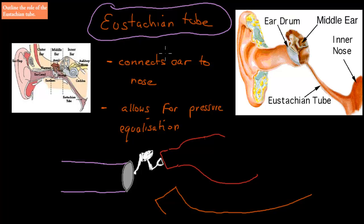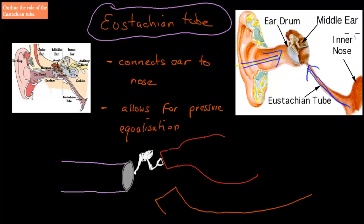The Eustachian tube is the tube which connects the middle ear to the actual nose. So we've got the eardrum here, which is where air passes in — past the pinna onto the eardrum. And then we've got air also coming in the other way, into the middle ear from the other side. It pushes through the nose; when you breathe in through your nose, some of that air will also go towards your ear through the Eustachian tube.